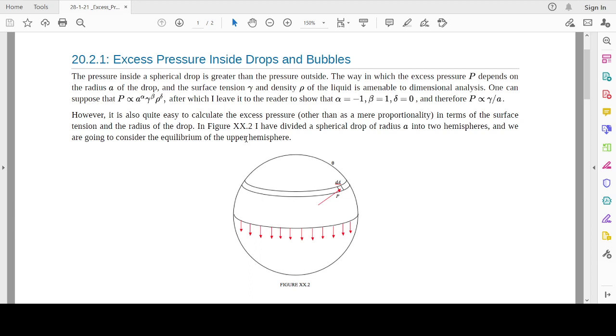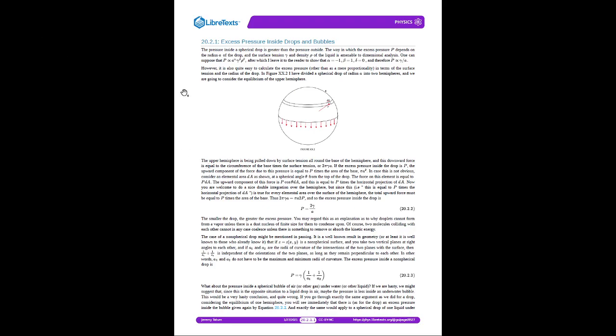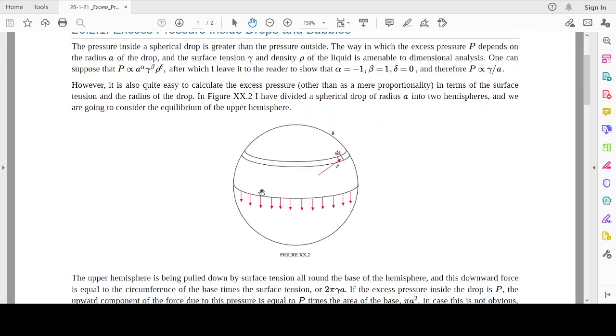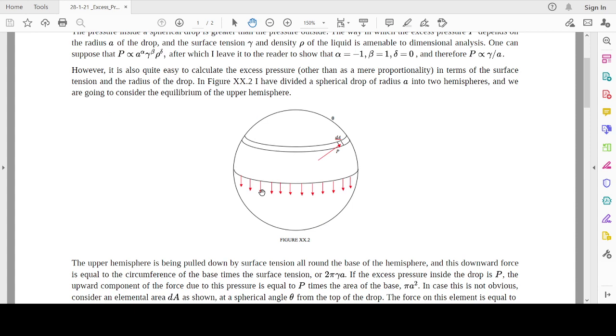We are going to consider the equilibrium of the upper hemisphere. So the upper hemisphere is being pulled down by the surface tension all around the base of the hemisphere, and this downward force is equal to the circumference of the base times the surface tension.